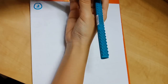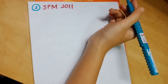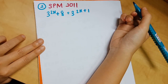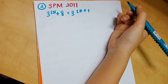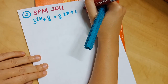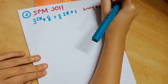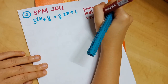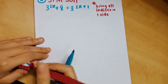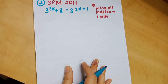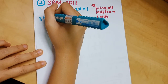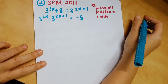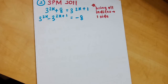The second type of popular SPM indices question is solving for x using logarithm. This question is from SPM 2011: 3^(2x) + 8 = 3^(2x+1). The first step is to bring all the number terms to one side and all the terms with powers to the other. Here 8 goes to the right-hand side and 3^(2x+1) moves to the left, changing signs accordingly.